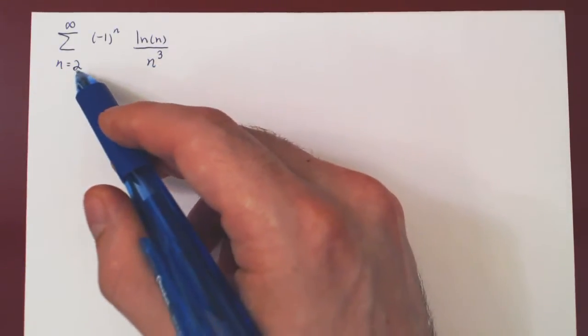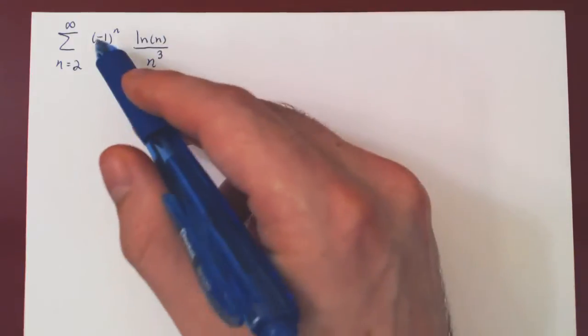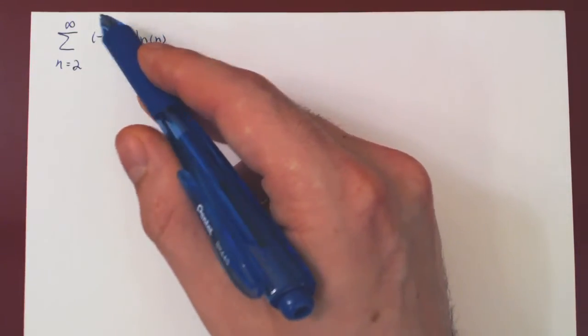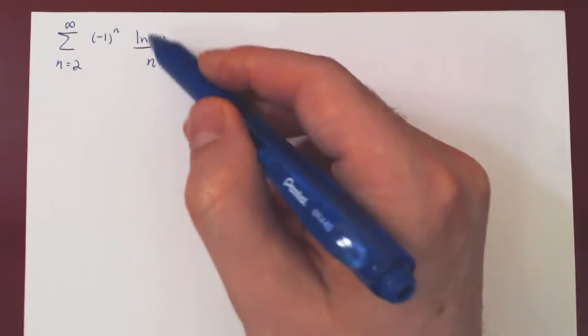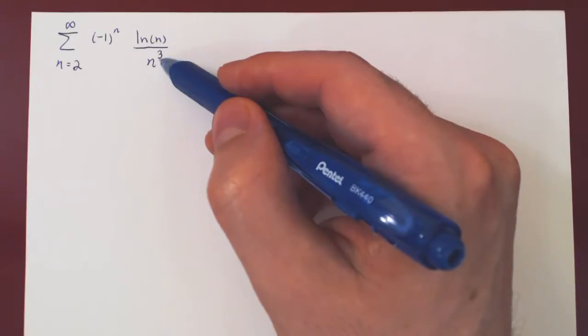So, as n goes from 2 to infinity, ln of n over n cubed is positive. The negative 1 to the n will give us an alternation in sign, so we have here clearly an alternating series where ln of n over n cubed is bn.